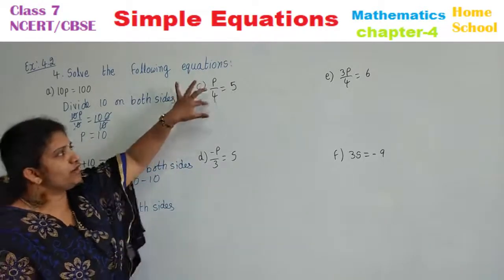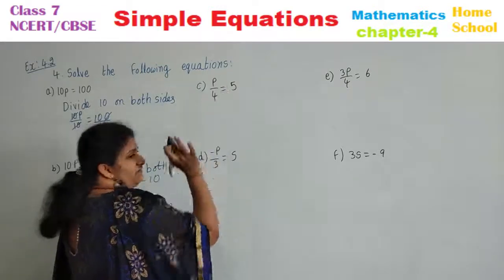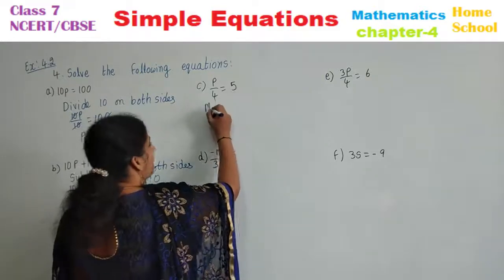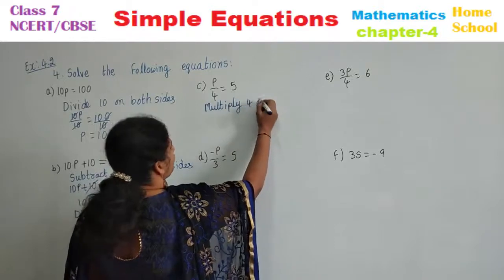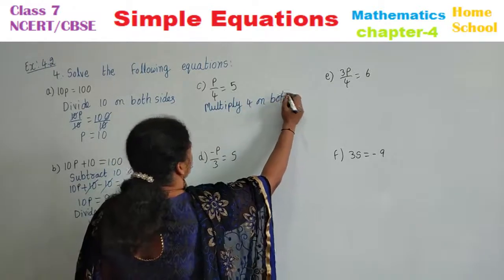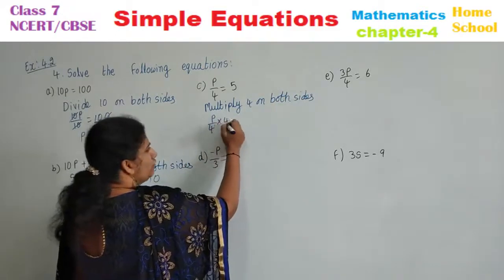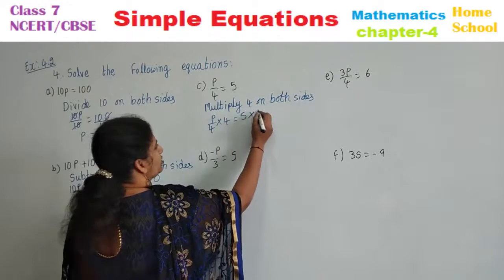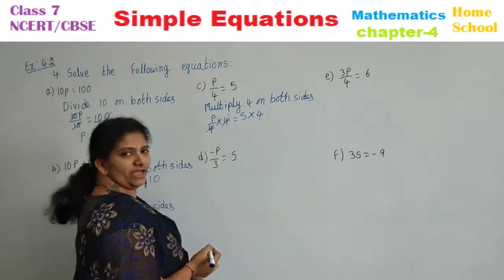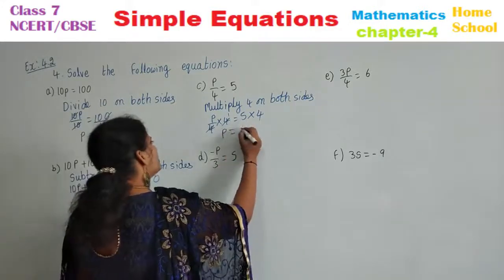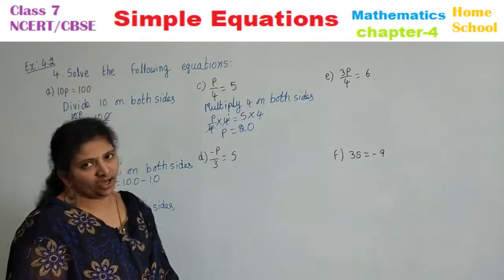See option C: P by 4 is equal to 5. A number is divided for the variable, so we need to multiply with that number on both sides. Multiply 4 on both sides. P by 4 into 4 is equal to 5 into 4. 4 ones are 4, P into 1 will be P. 5 fours are 20. P is equal to 20 is your answer.